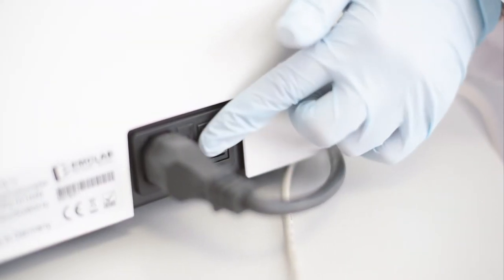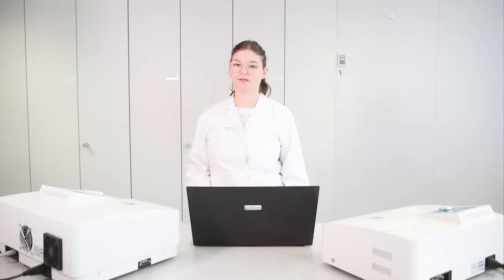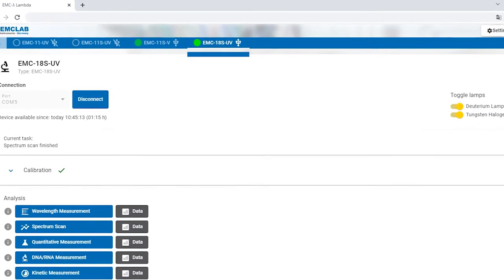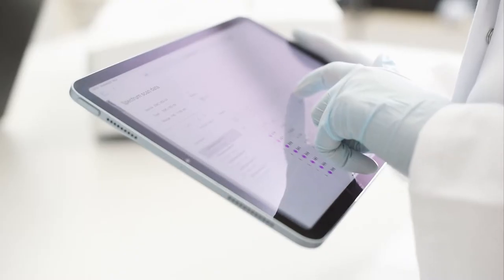After switching on the instrument you can connect it with the software and the green light indicates which instrument the software is connected to. You can use our software for both PC and tablet to check the results.